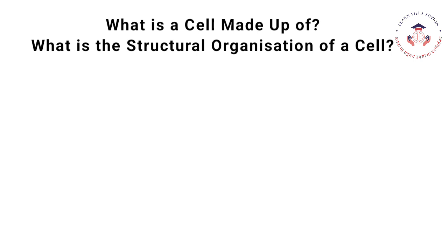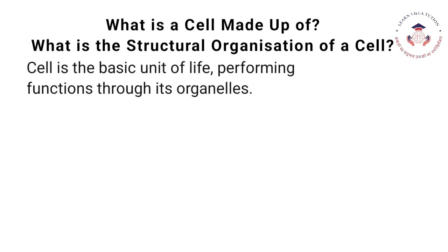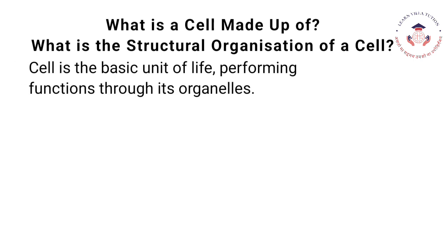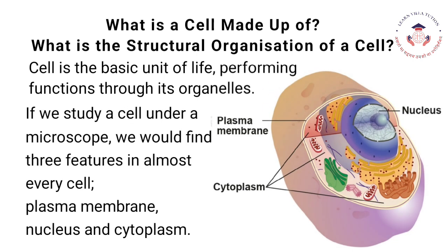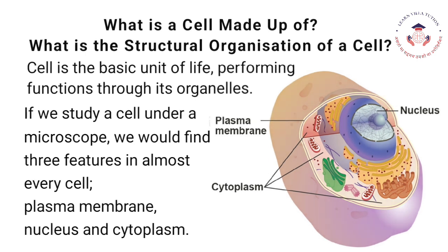What is the structural organization of a cell? A cell is the basic unit of life, performing functions through its organelles. If we study a cell under a microscope, we would find three features in almost every cell: Plasma Membrane, Nucleus, and Cytoplasm.